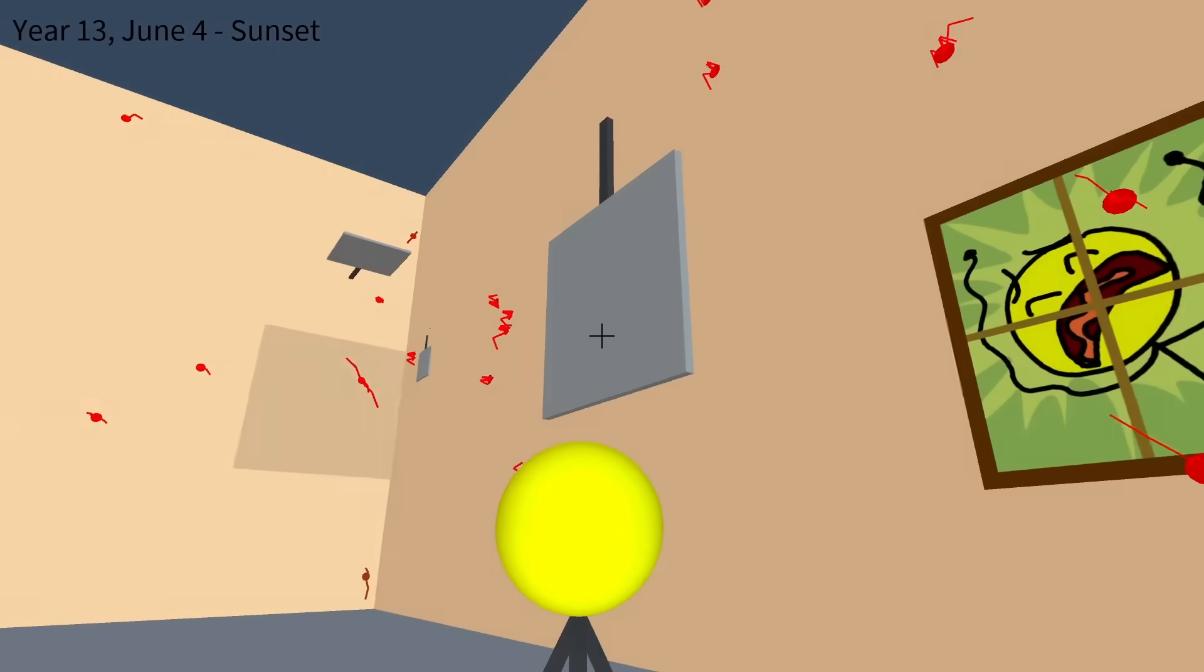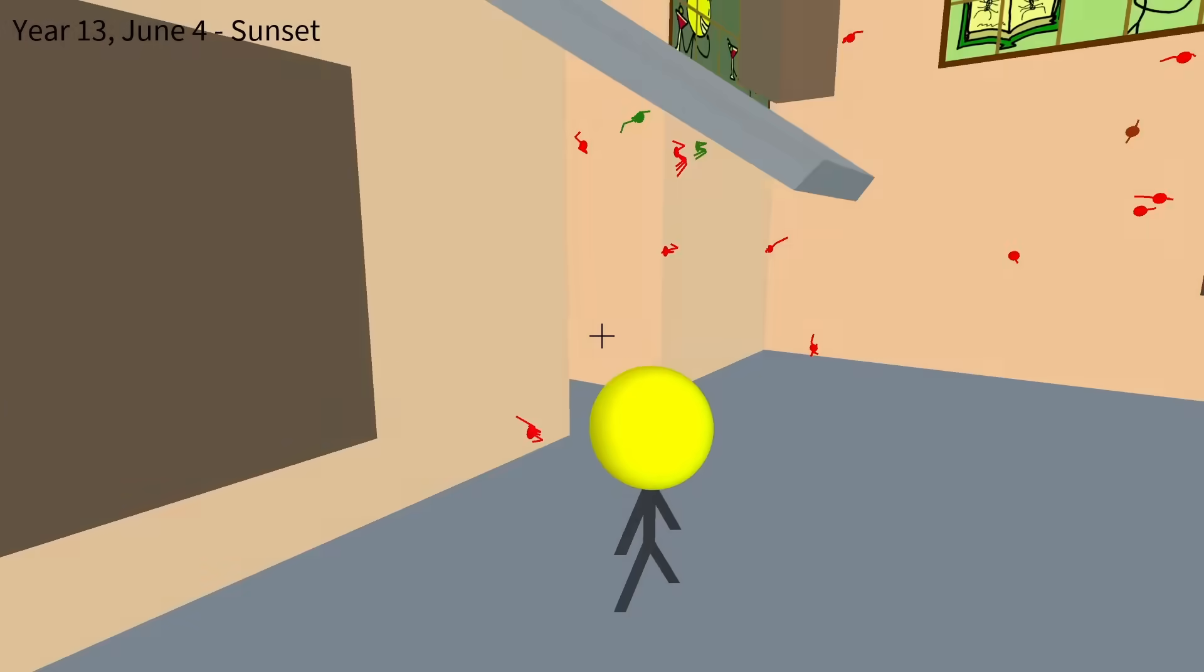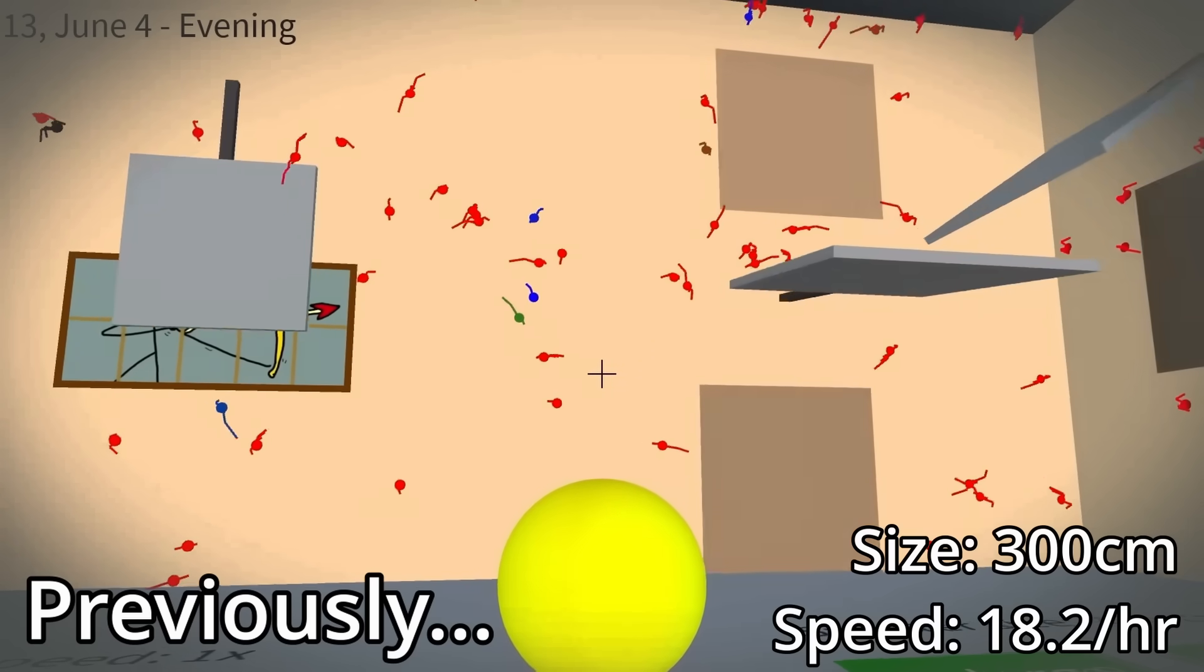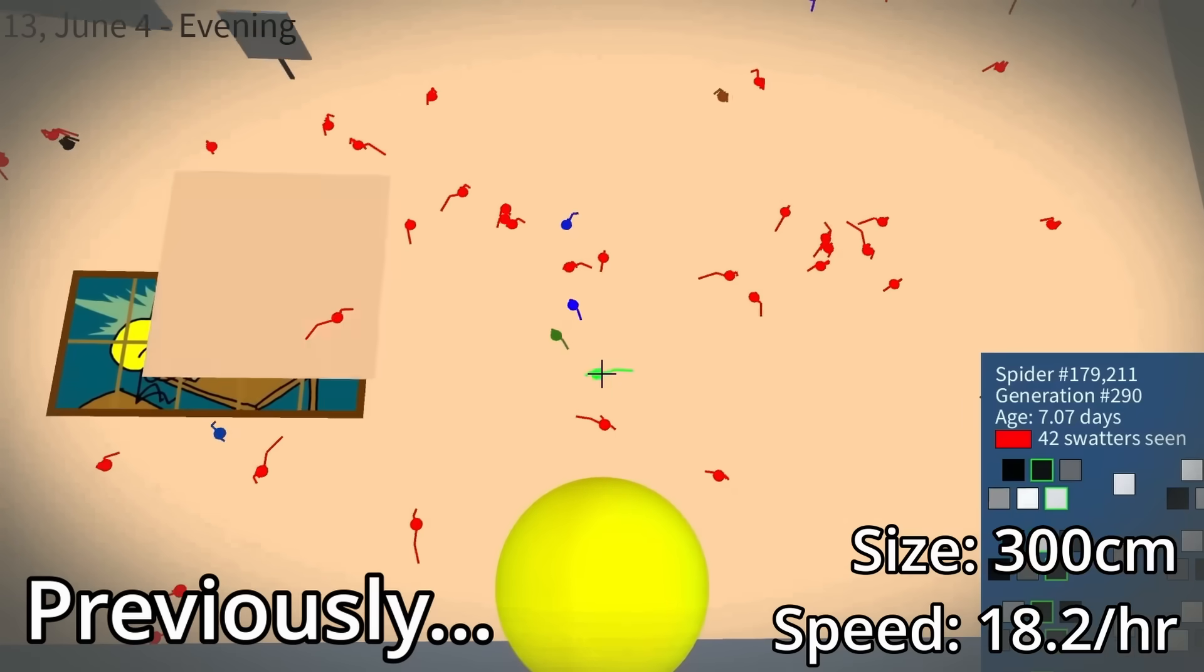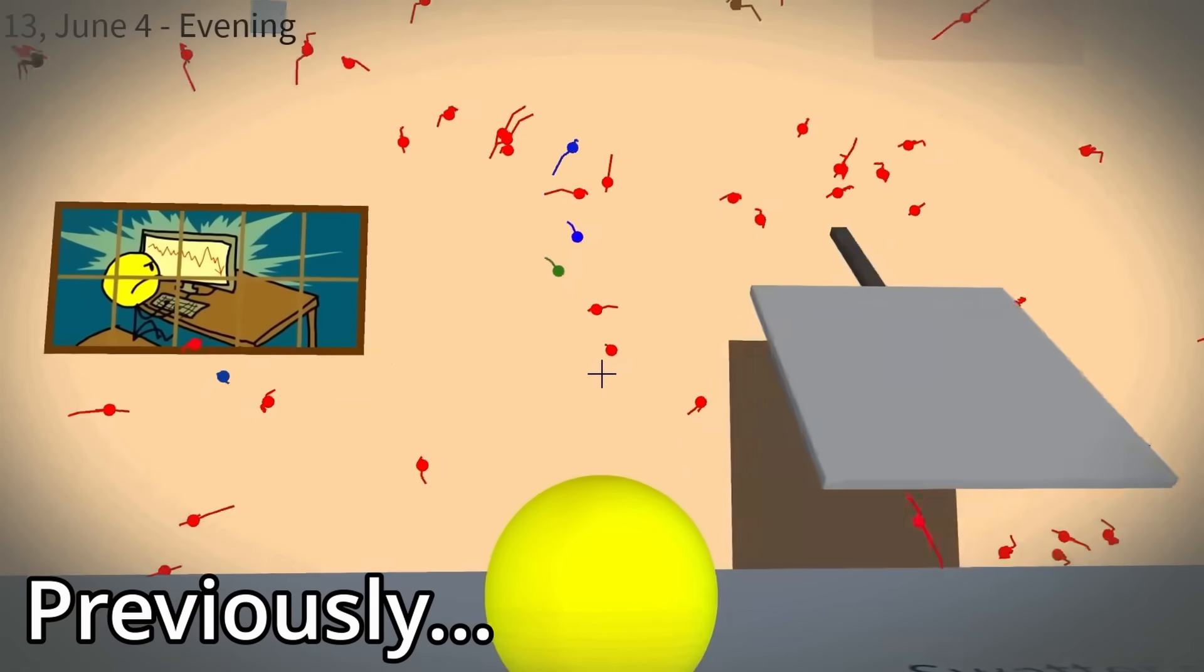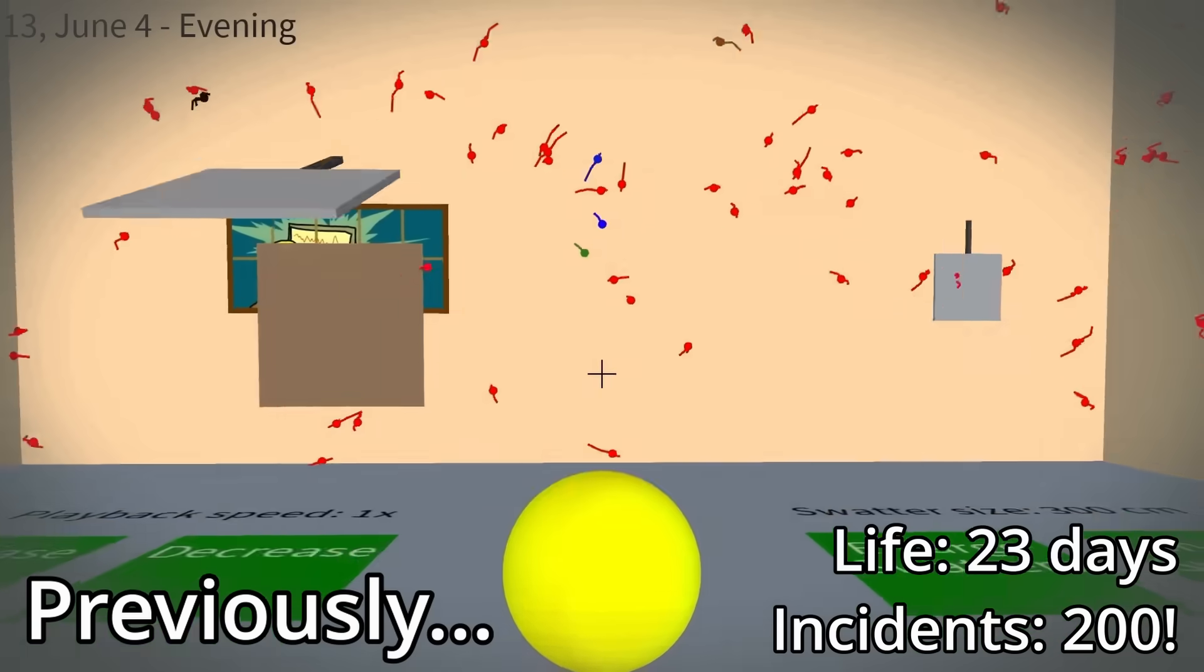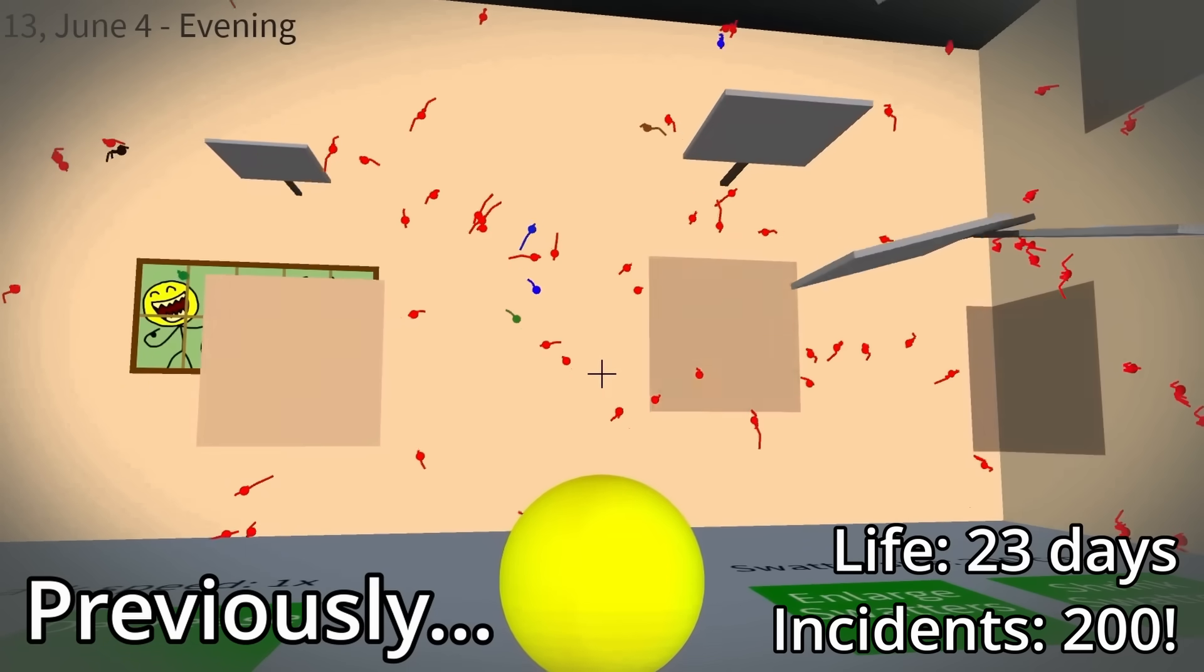This is where we're at now, with the very standard last level settings, where we have a swatter size of 300 and a swatter speed of 18. These guys are like the most advanced swatter avoiders that we've ever devised, and they live an average of 23 days and survive an average of 200 swatter incidents.